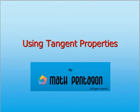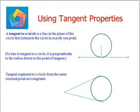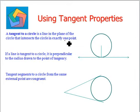Hello and welcome. Our topic for the day is using tangent properties. To understand the properties of tangents, let's understand some theorems and properties about them. A tangent to a circle is a line in the plane of the circle that intersects the circle in exactly one point.